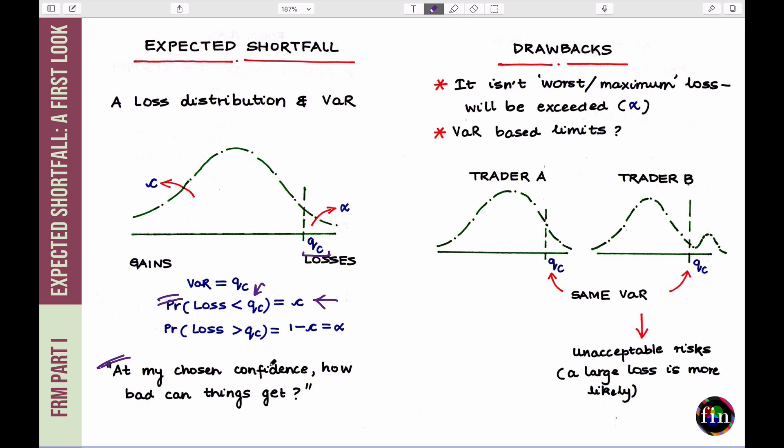A very attractive feature of this number that we have arrived at QC is that if you have positions which are exposed to a multitude of risk factors, that number is like one number which you can keep in mind. That's like the sum of all these risk factors taken together. It's like telling you that on an aggregate basis, how bad can things get at a chosen confidence? That means it's not really the worst loss. It's a loss which is at my chosen level of confidence. That's as far as VAR is concerned.